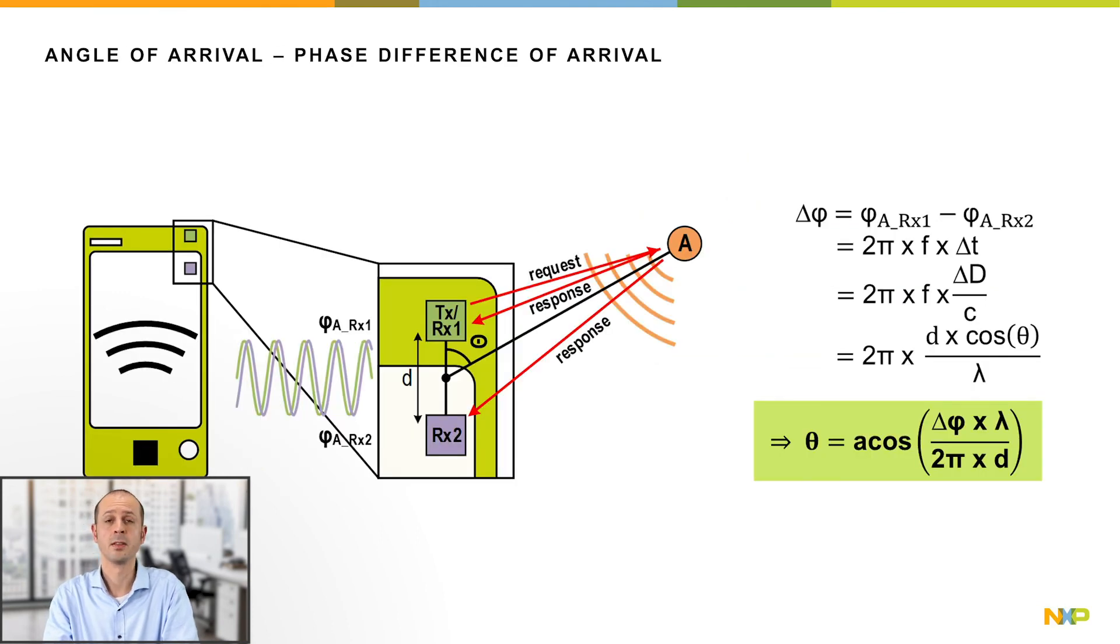Next to calculating a distance, UWB can also be used to calculate an angle of arrival. Angle of arrival is based on a phase difference of arrival technique.